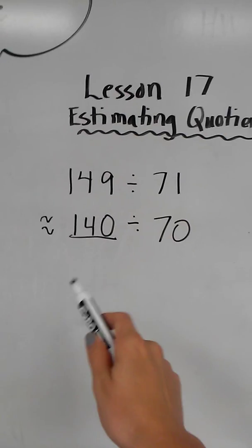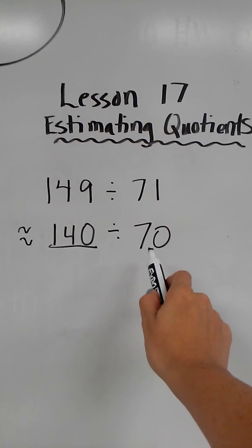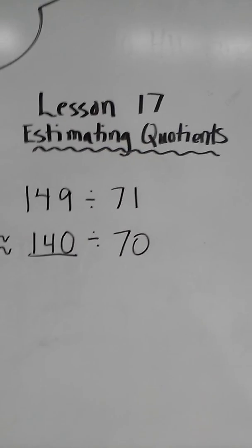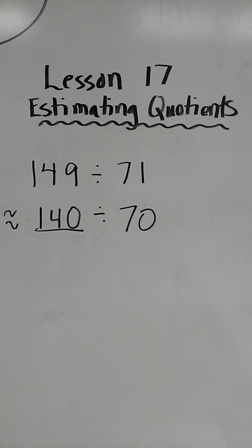The reason I wouldn't round this to, say, 100 or 200 is that 70 doesn't go evenly into 100 or to 200, which is why I rounded it to 140, which is a multiple of 70.